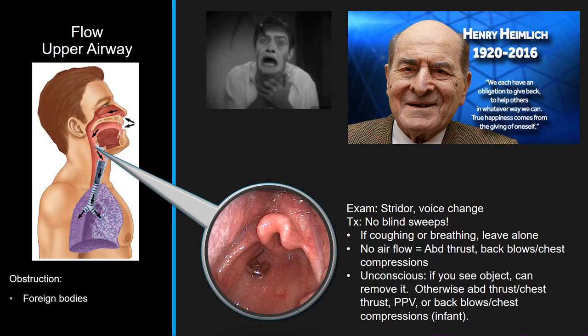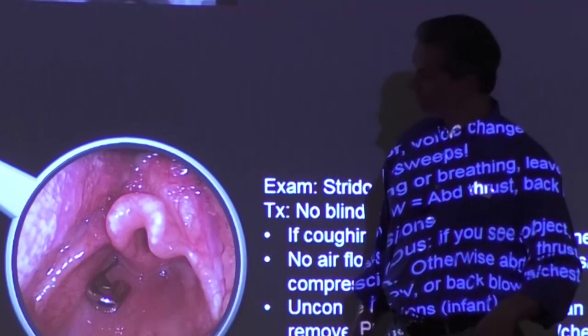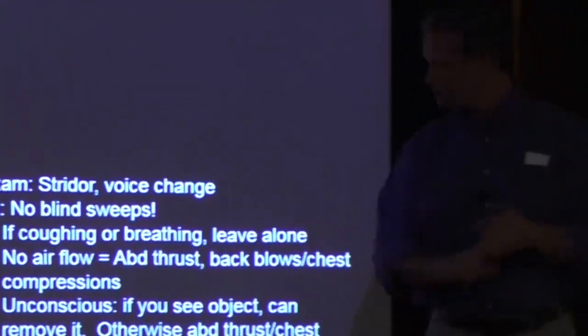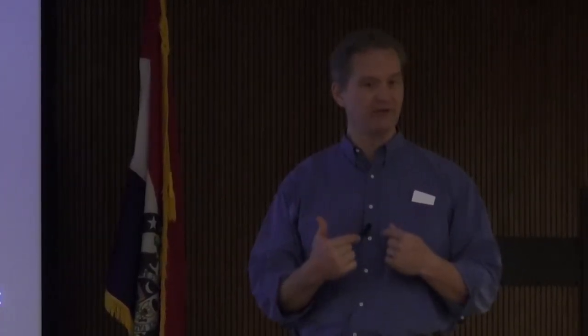Other upper airway problems: a safety pin or straight pin hooked into the esophagus just below the epiglottis - I actually saw this. Stridor and voice change indicate extrathoracic airway obstruction. They will have difficulty inhaling but not exhaling. People with asthma and COPD have difficulty exhaling; people with extrathoracic foreign body obstruction have difficulty inhaling - that's how you tell. Don't stick your fingers in somebody's throat - you will make it worse, I guarantee you.